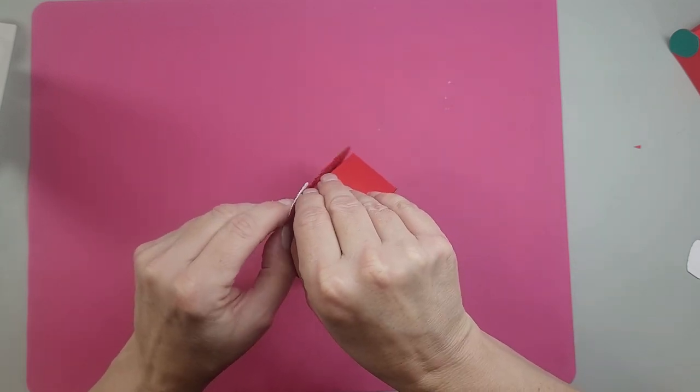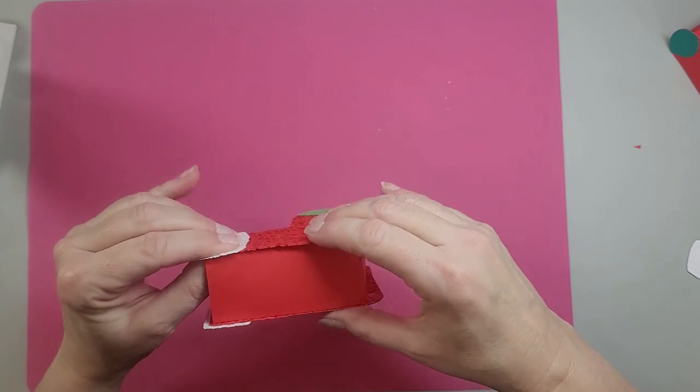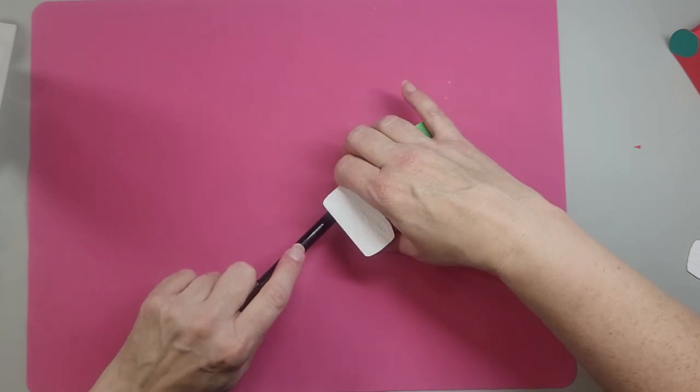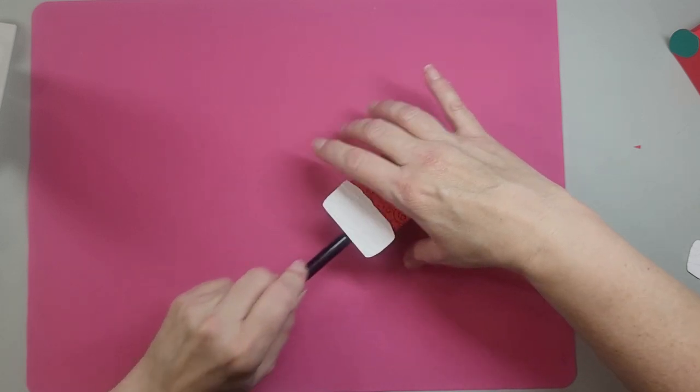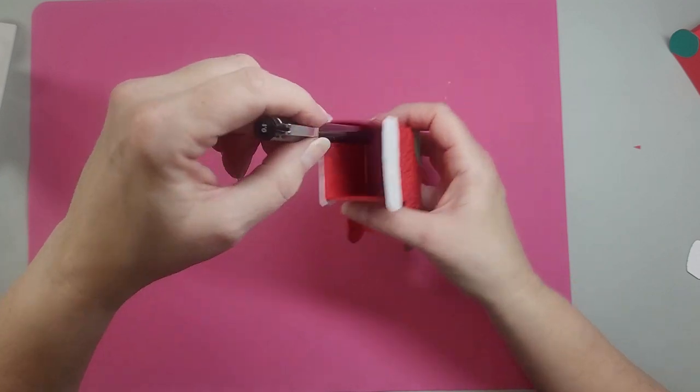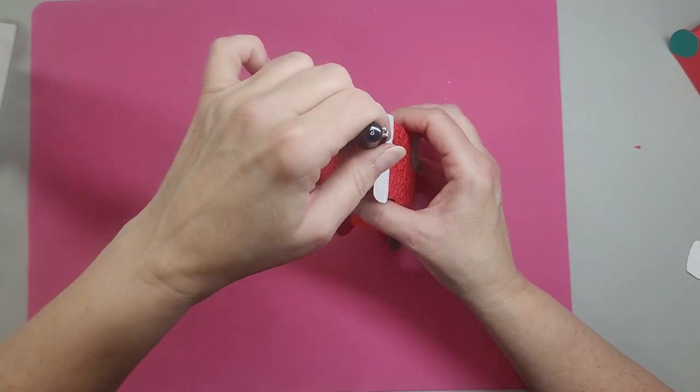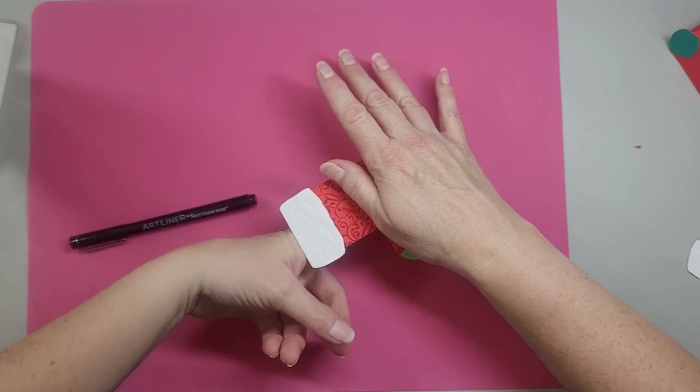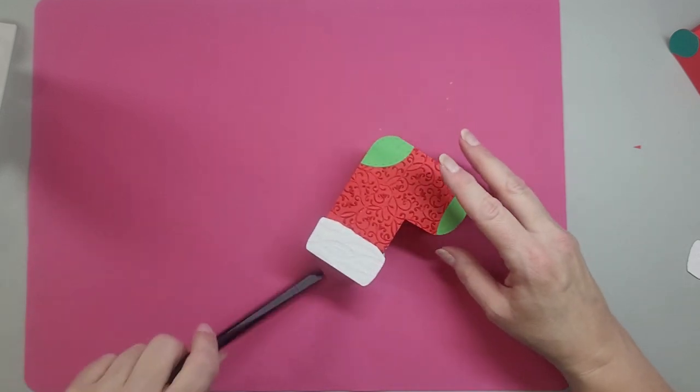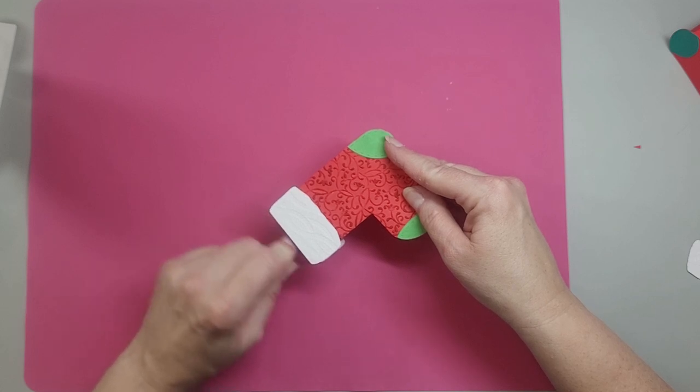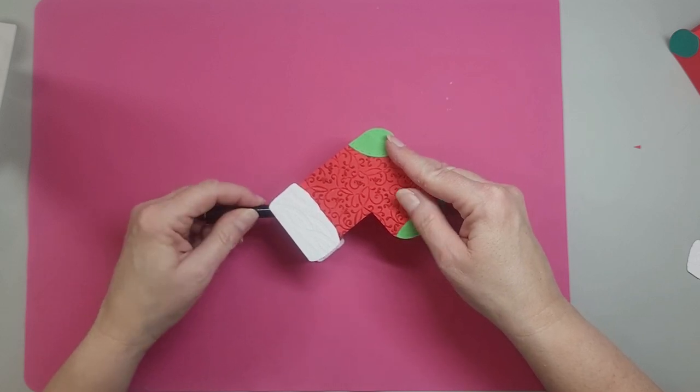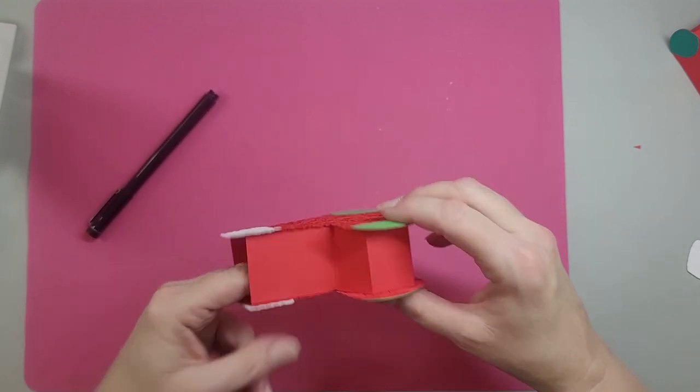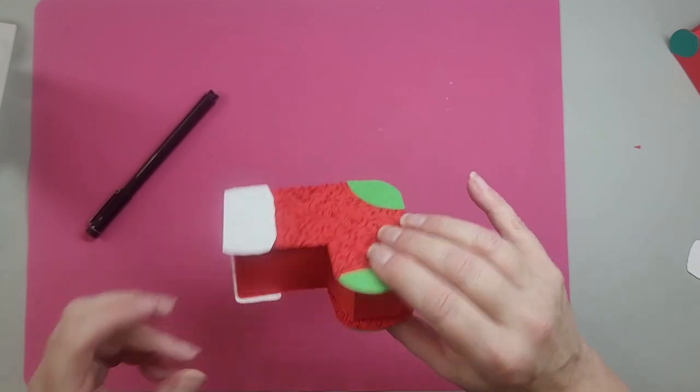That slid a little bit. Now, if you can't reach all the way inside, you can use a pen to press down. So what I'm doing is I'm pressing along this side here. Go across the bottom into the toe.